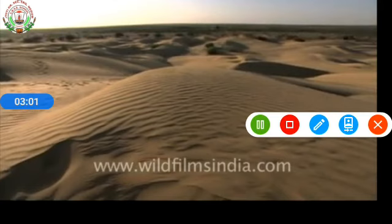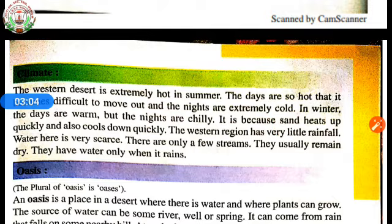Now, coming to the climate. The western desert is extremely hot in summer. The days are so hot that it is difficult to move out, and the nights are extremely cold. In winter, the days are warm but the nights are chilly. This is because sand heats up quickly and also cools down quickly.